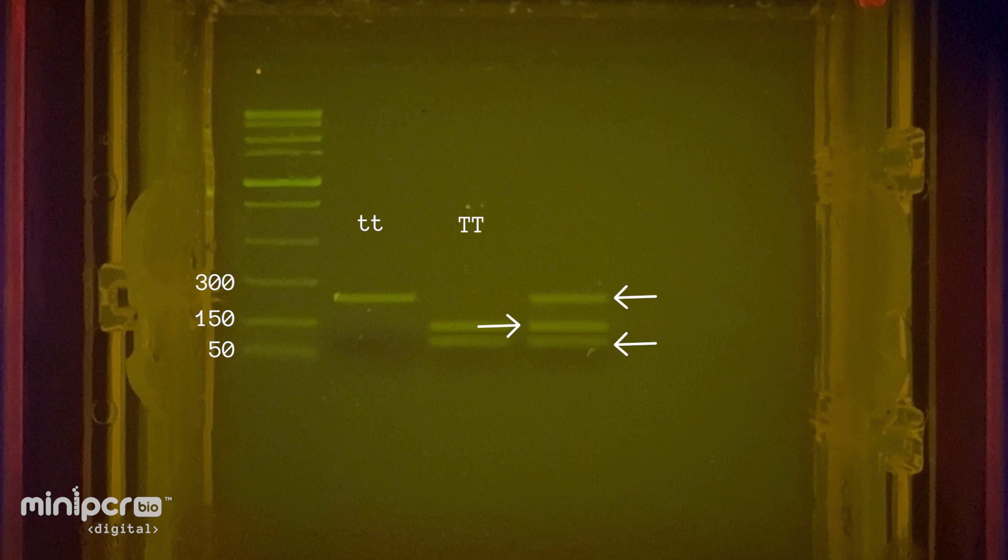In the third lane, we see three bands. Comparing them to our ladder, we see that this band contains DNA fragments 250 base pairs long, this band contains DNA fragments that are 150 base pairs long, and this band contains DNA fragments that are 100 base pairs long.